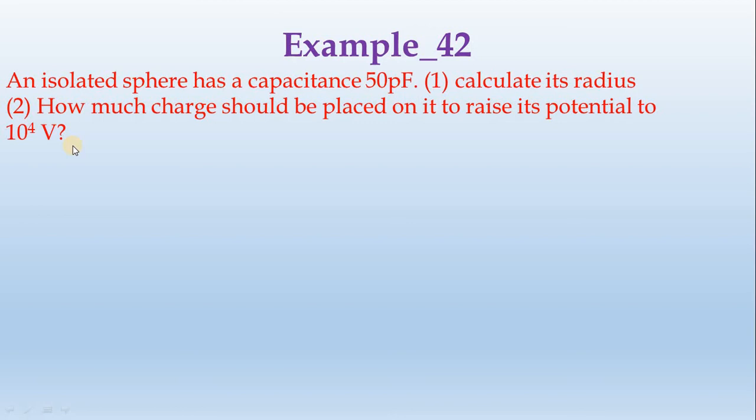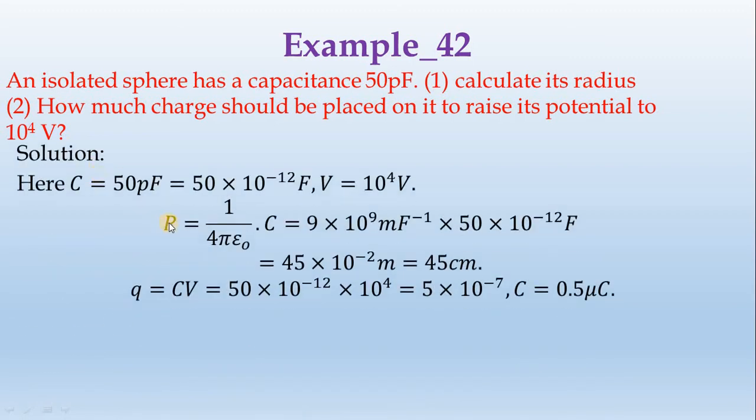For the radius, C equals 4πε₀R. We can rearrange to find R equals 1 over 4πε₀ times C, which equals 9 times 10⁹ meter per farad times 50 times 10⁻¹² farad, giving 45 times 10⁻² meters. The radius is 45 centimeters.